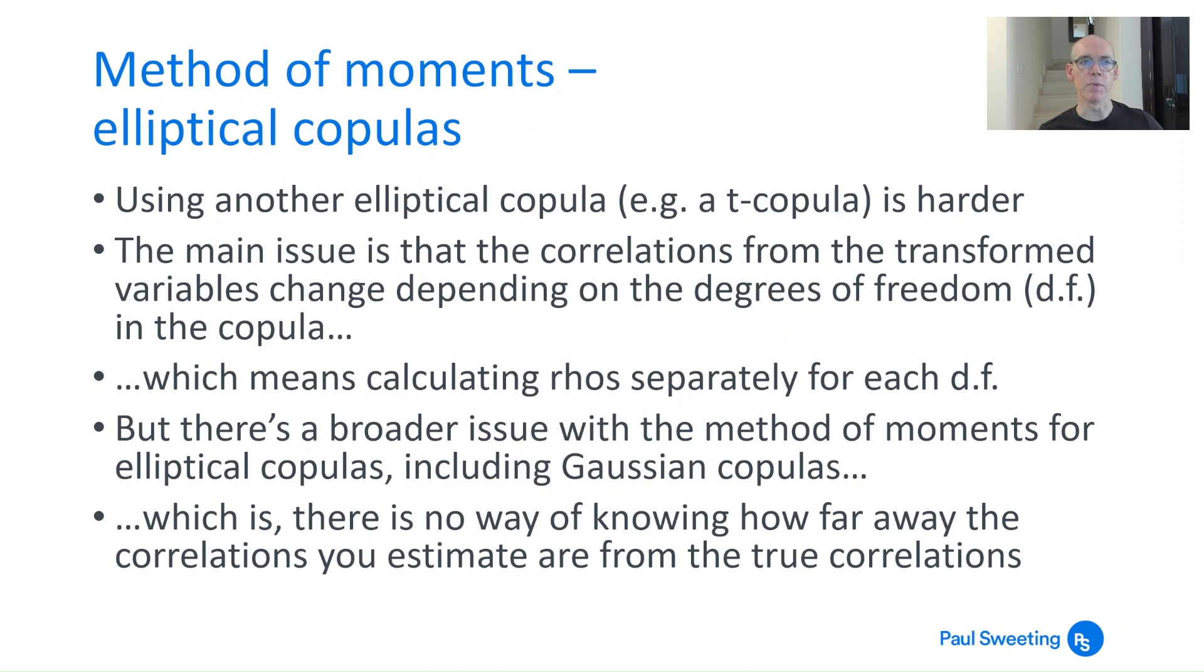More broadly, if you're looking at elliptical copulas, then it's a bit harder, because you've also got to work out what the degrees of freedom for a t copula is. And the correlations between the transformed data are going to change depending on what those degrees of freedoms are. You might have to calculate rhos separately for each degrees of freedom. But there's a broader issue with method of moments for any elliptical copula, including the Gaussian copula. And that is that you've no way of knowing how far away from the true correlations are the correlations that you've calculated.